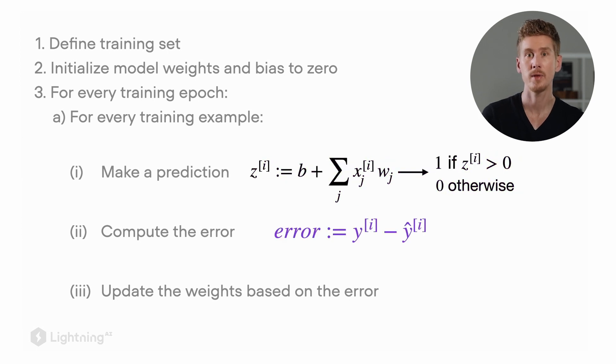Next we compute the error. In the case of the perceptron, the error is simply the difference between the true label and the predicted label, so y hat refers to the predicted label.